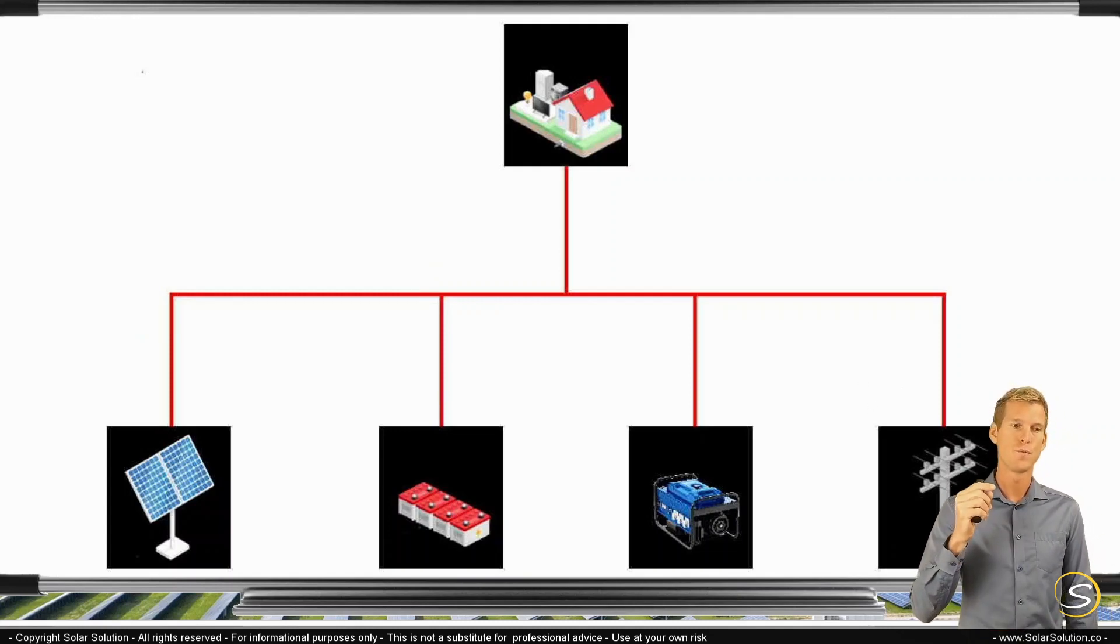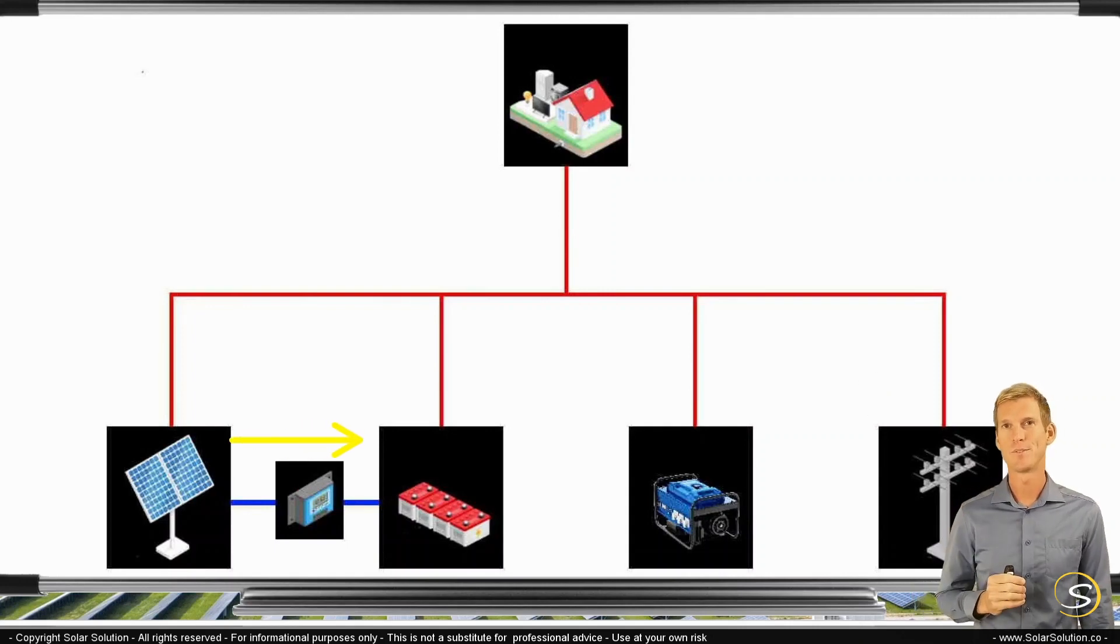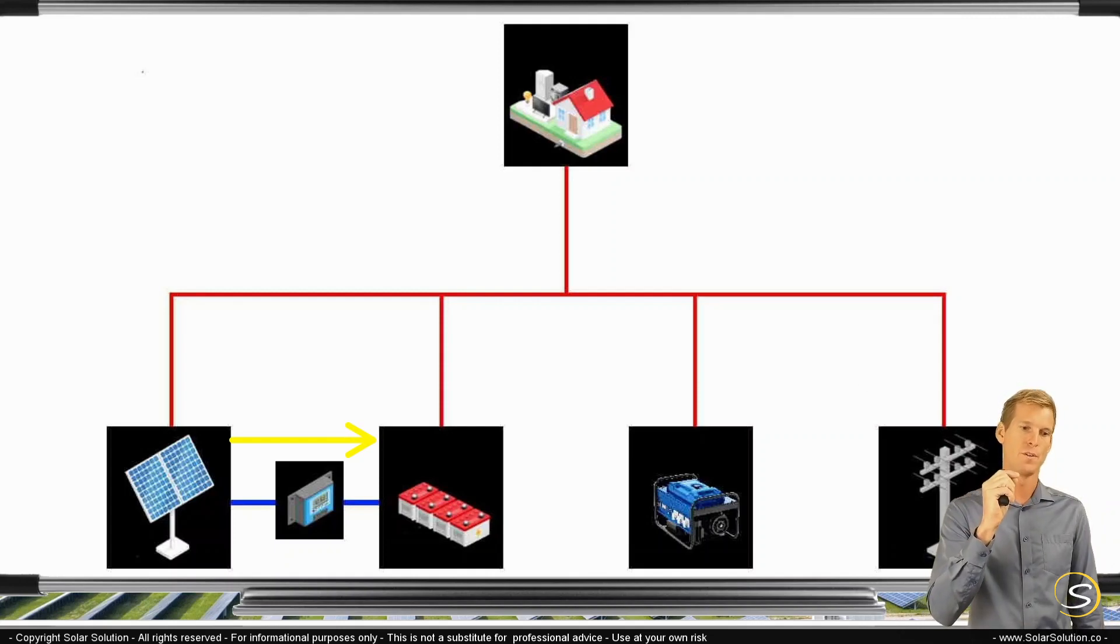If you would go for a direct connection between your solar panels and your battery bank with a DC to DC solar charge controller, this would be a DC coupled solar energy system because you couple your solar power directly only through DC to your battery bank.